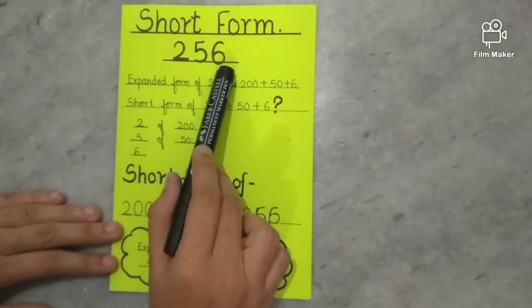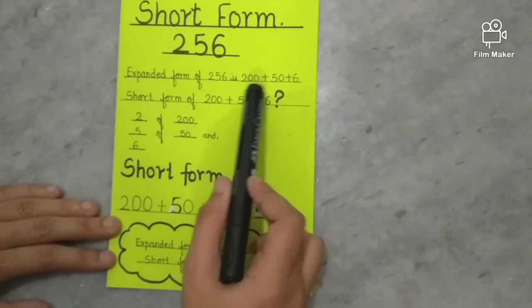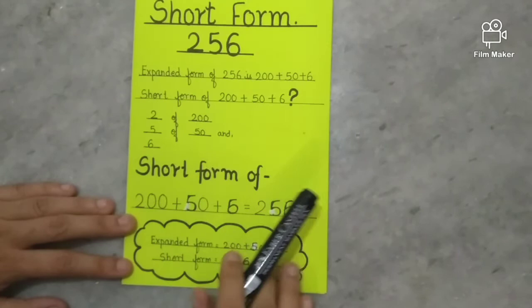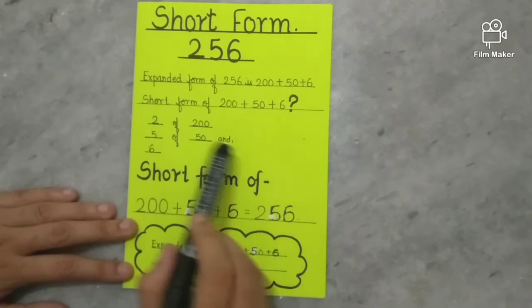In expanded form, we have a number 256. Expanded form of 256 is 200 plus 50 plus 6. Right? Okay, now what is the short form or standard form of 200 plus 50 plus 6?